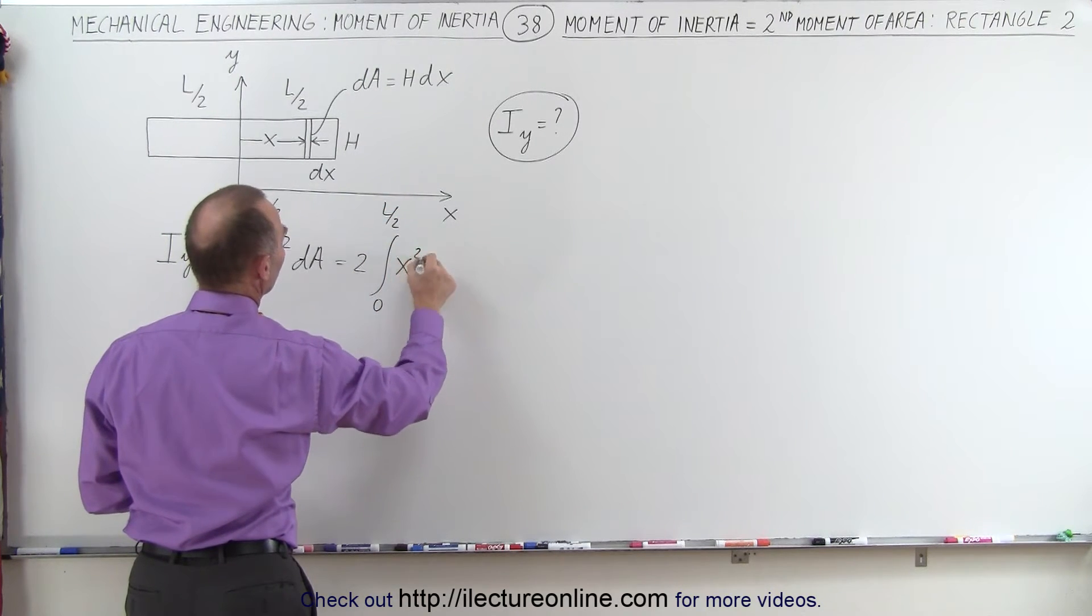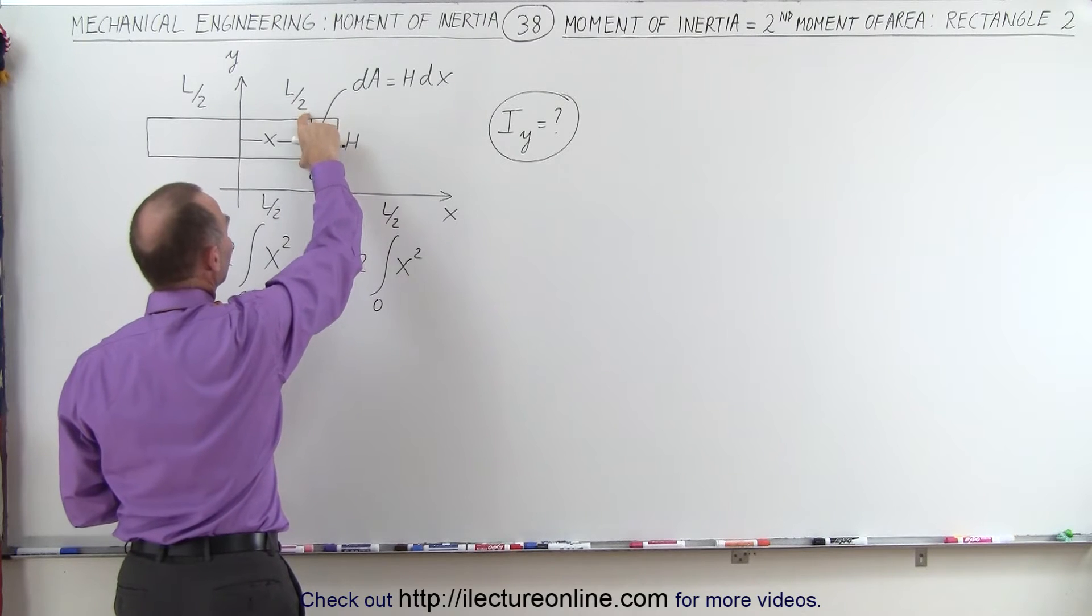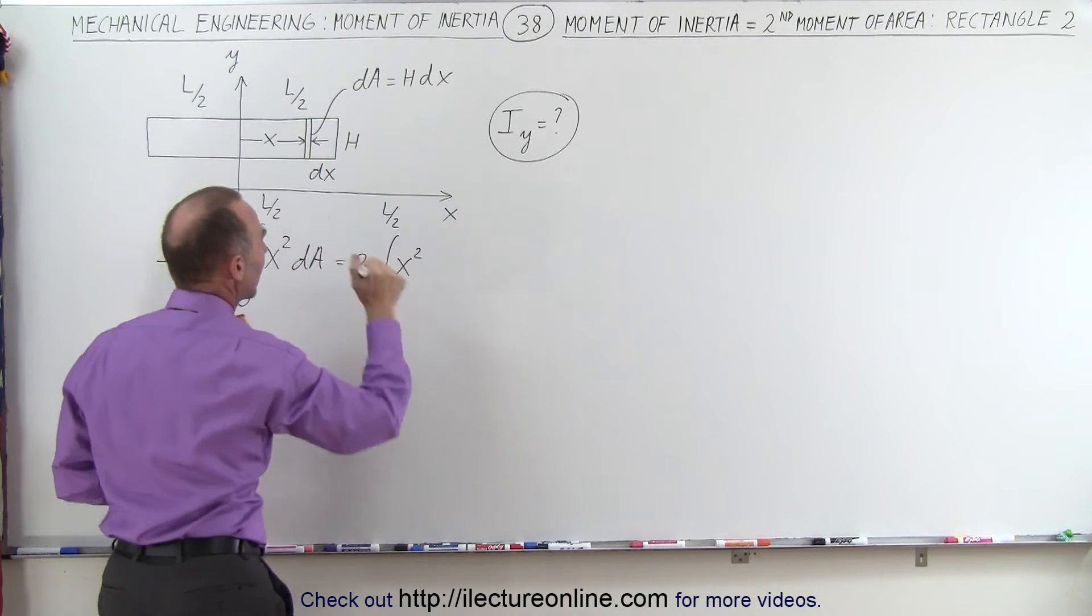So that then becomes equal to 2 times the integral from 0 to L over 2 of x squared, and our area element is the height, h, times the width, dx.